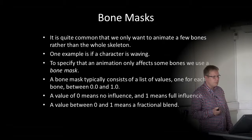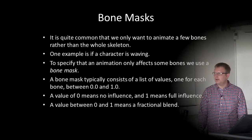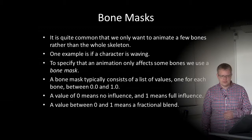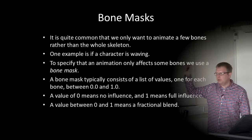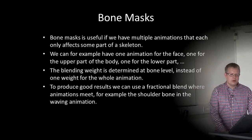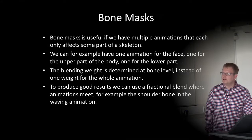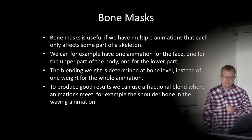It's quite common to animate only a few bones rather than the whole skeleton — for example, turning the head, moving an arm, or waving. To specify that an animation only affects some bones we use a bone mask. It typically consists of a list of values, one for each bone, between zero and one. A value of zero means no influence — my left arm is not involved when I wave with my right arm. A value of one means full influence for the relevant joints. A value between zero and one means a fractional blend.